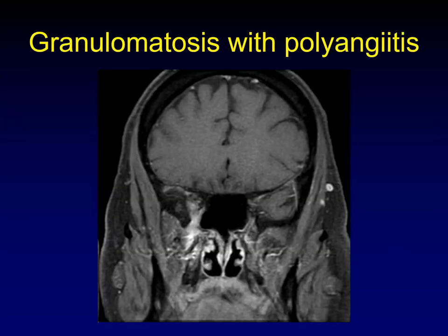Wegener's granulomatosis — here we're seeing the inferior orbital fissure and extension down into the pterygopalatine ganglion and pterygopalatine fossa. This is what it should look like on the other side. Classic appearance here for perineural spread along V2, the infraorbital nerve, and the pterygopalatine ganglion.